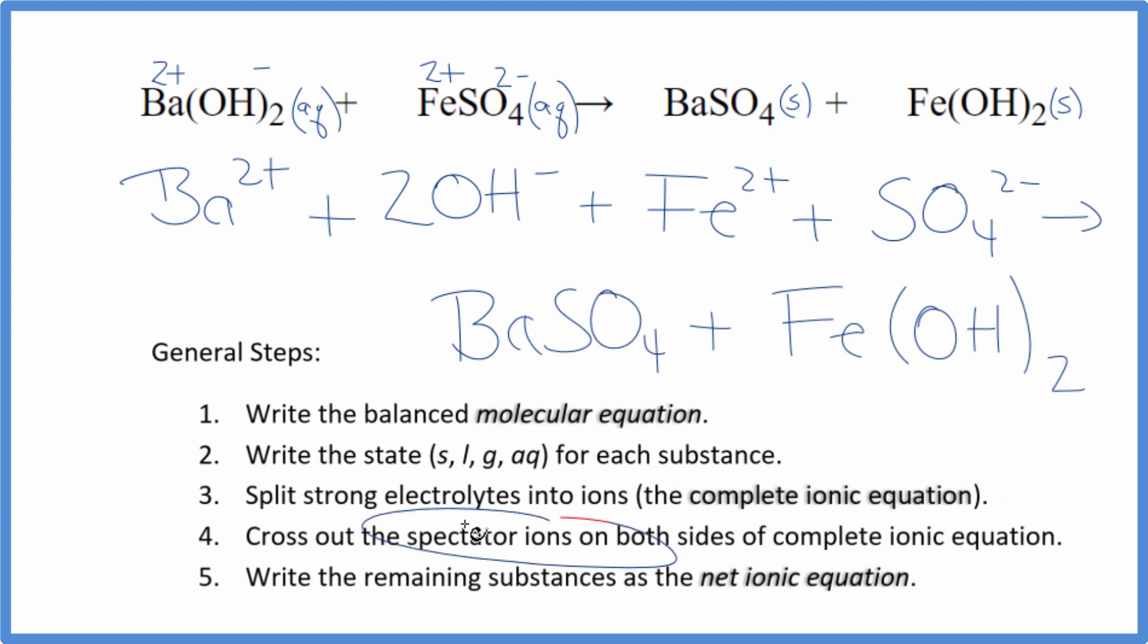After that, we'll cross out spectator ions. They're on both sides. But in this case, there's nothing that's the same on both sides. So we can't cross anything out. So it's the complete ionic equation, but it's also the net ionic equation.